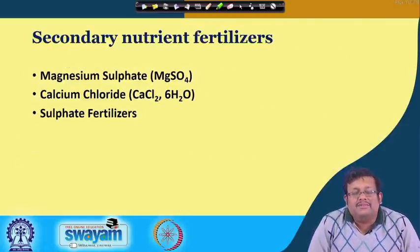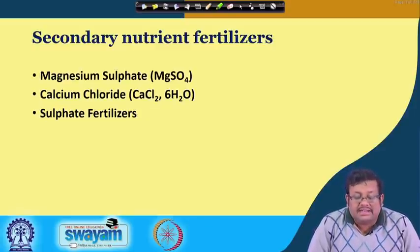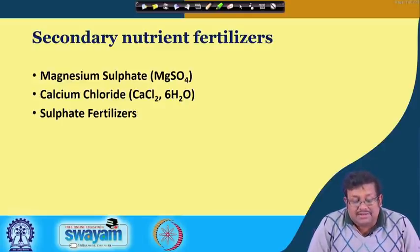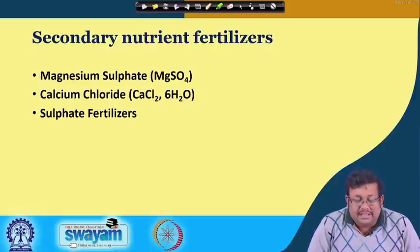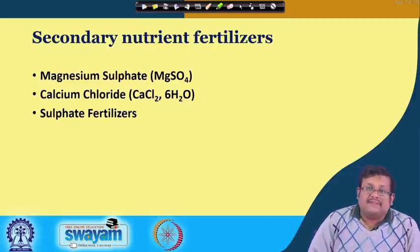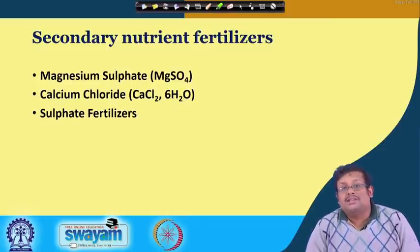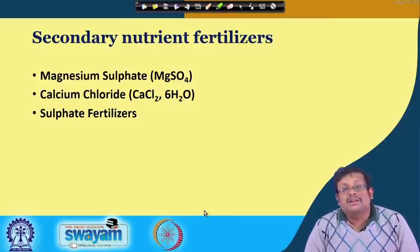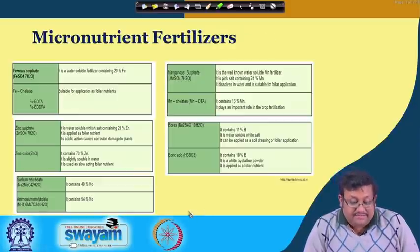Secondary nutrient fertilizers include magnesium sulphate (MgSO4), calcium sulphate, calcium chloride (CaCl2·6H2O), and various sulphate fertilizers. These are applied to correct sulphate deficiency, especially for oilseed crops like mustard, which require considerable amounts of sulphur.